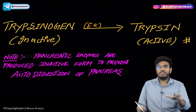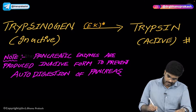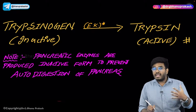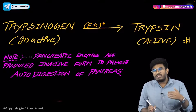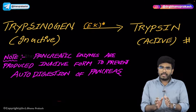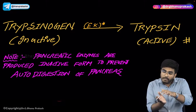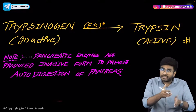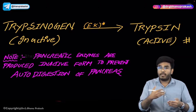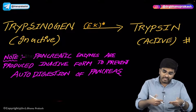Just remember: trypsinogen is converted into trypsin with the help of enterokinase. Why are these pancreatic enzymes — trypsinogen, chymotrypsinogen — produced in an inactive form? If they were produced in an active form inside the pancreas, they would cause digestion of the pancreas itself. So inside the pancreas, all digestive enzymes are in an inactive form; they come into the intestines where they are activated.